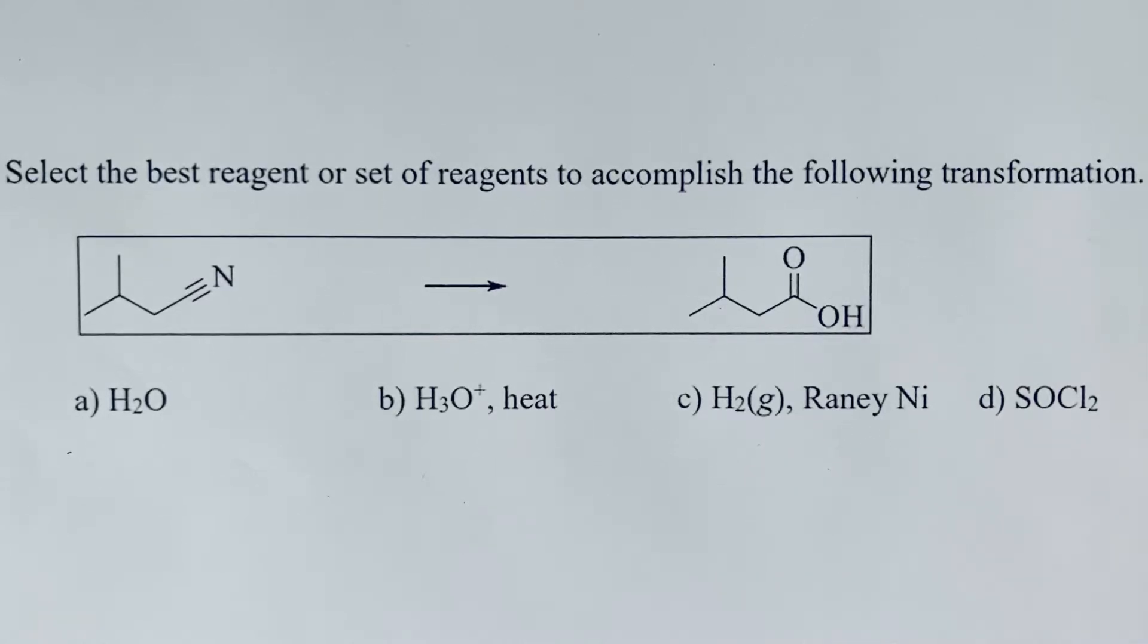Select the best reagent or set of reagents to accomplish the following transformation. What we want to do is look at what our starting material is and what our product is, and see if the carbon skeleton has changed and if the functional group has changed.